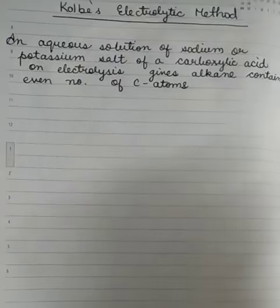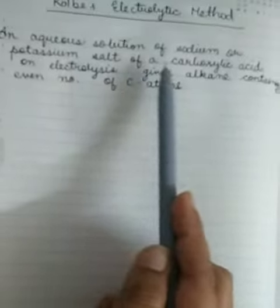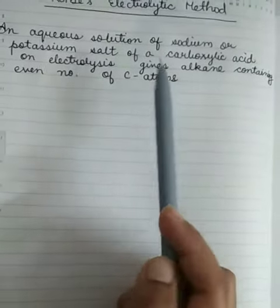So today we are going to study Kolbe's electrolytic method. An aqueous solution of sodium or potassium salt of a carboxylic acid on electrolysis gives alkanes containing even number of carbon atoms.